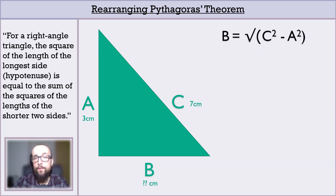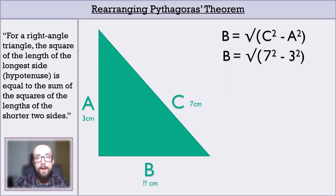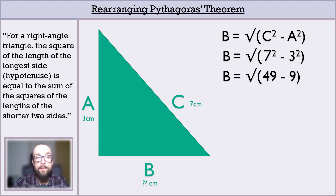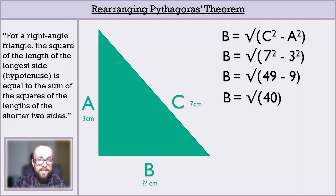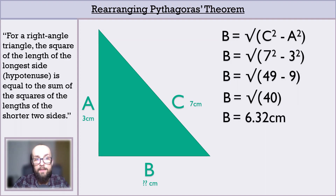Let's have a go at solving for B, keeping our final answer to three significant figures and remembering to add units at the end. We already have that rearranged equation: B squared equals C squared minus A squared. Plugging in our known values — C is 7 and A is 3 — and resolving the squares tells us B equals the square root of 49 minus 9, because 49 is 7 squared and 9 is 3 squared. 49 take 9 is 40, so B equals the square root of 40. B is probably between 6 and 7, since 40 is between 36 (6 squared) and 49 (7 squared). The calculator confirms this: root 40 is 6.32 to three significant figures. So B is 6.32 centimetres long.